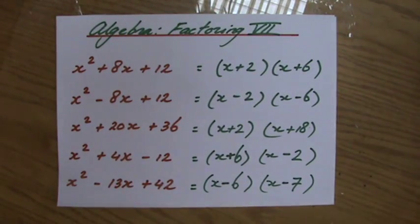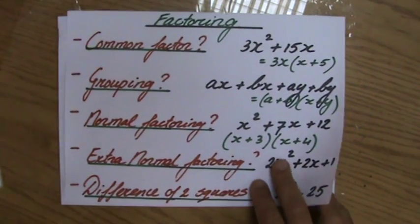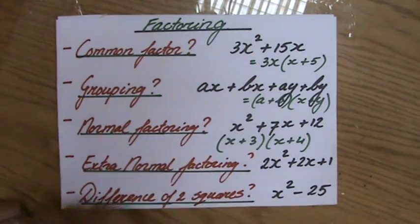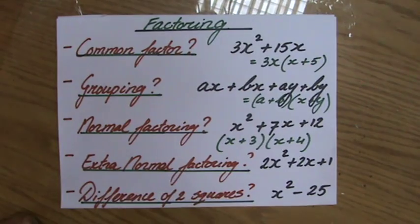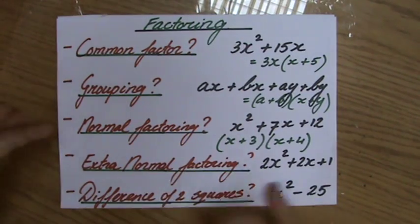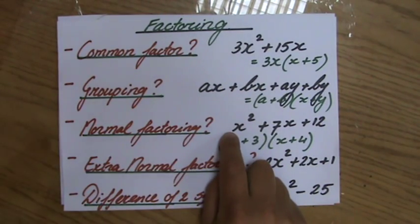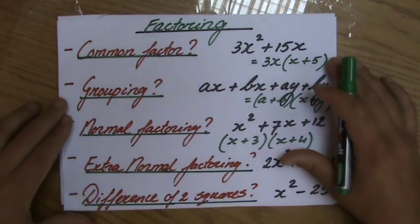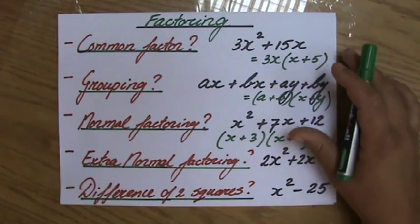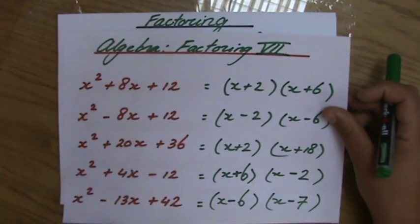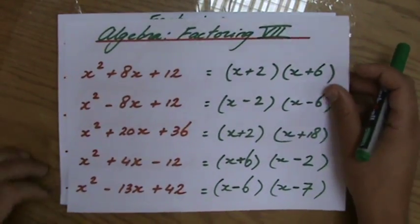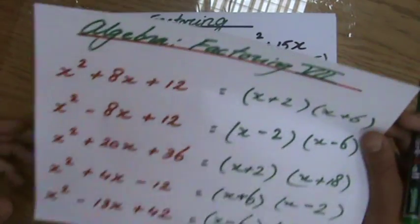Okay. So, we are factoring expressions. We are putting it in the brackets. Is there a common factor? Is the first question you ask yourself. Can I factorize it by grouping? Is the second question you ask yourself. And then the third question is, is it normal factoring with a coefficient of 1 for my x squared term? And by looking at those example questions, be careful when you have negative signs. Okay? It's not more difficult. You just have to take a little bit more care of your work.